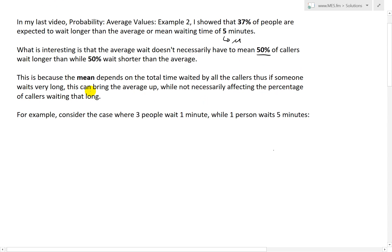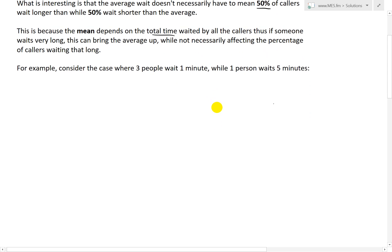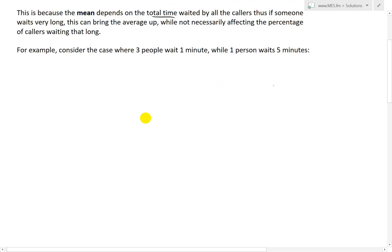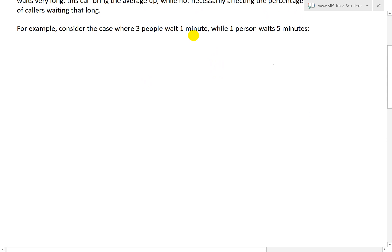This is because the mean depends on the total time waited by all the callers. If someone waits very long, because you're dealing with time, not the number of people directly, this can bring the average up while not necessarily affecting the percentage of callers waiting that long. For example, consider the case where 3 people wait 1 minute while 1 person waits 5 minutes.